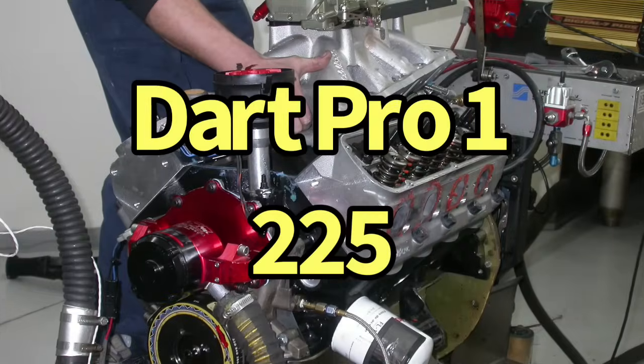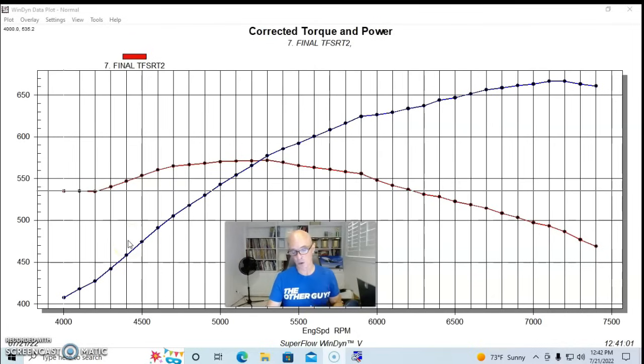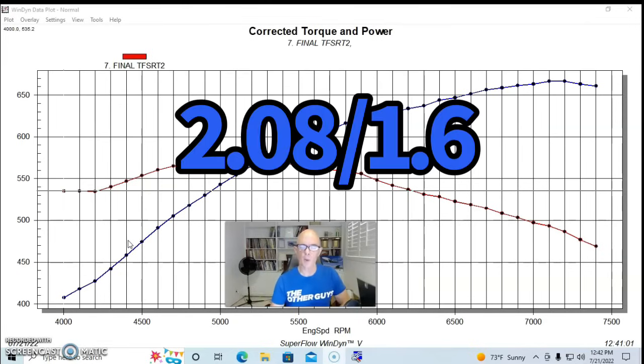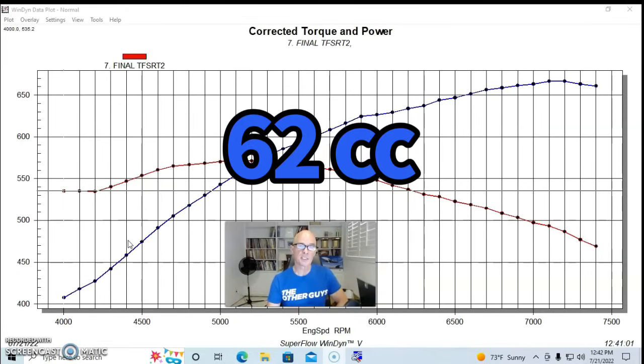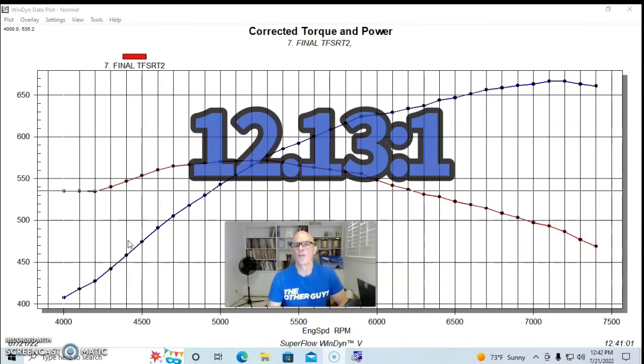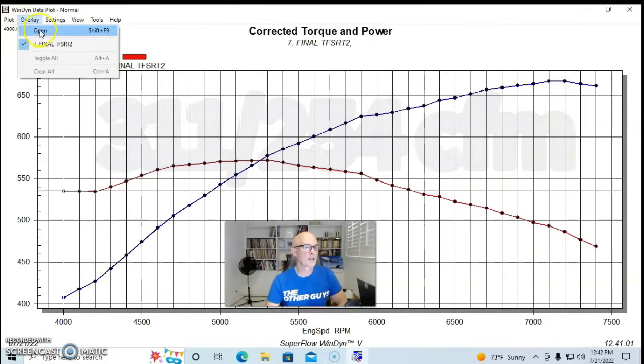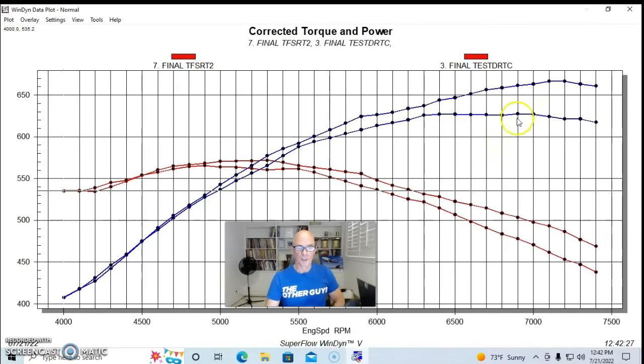Now it's time to take a look at the offering from Dart, and that came in the form of their CNC ported 225 heads. The Dart 225 actually measured 220cc's on the intake port. They featured a 2.08/1.6 valve package, they had a 62cc combustion chamber, which means we had a 12.13 static compression ratio. Run with the Dart heads, you can see they didn't quite equal obviously the Trick Flow heads, but they did produce 627 horsepower at 6500 and 564 foot-pounds of torque. The Dart 225 heads have always worked well, we've tested them on a lot of different things.